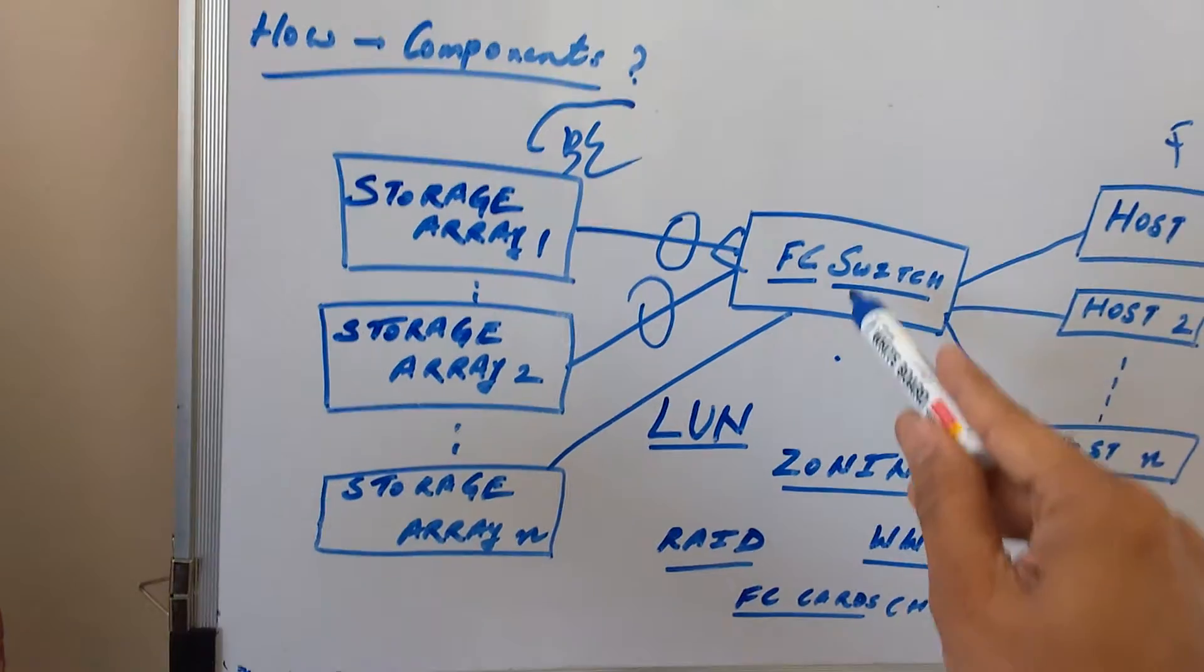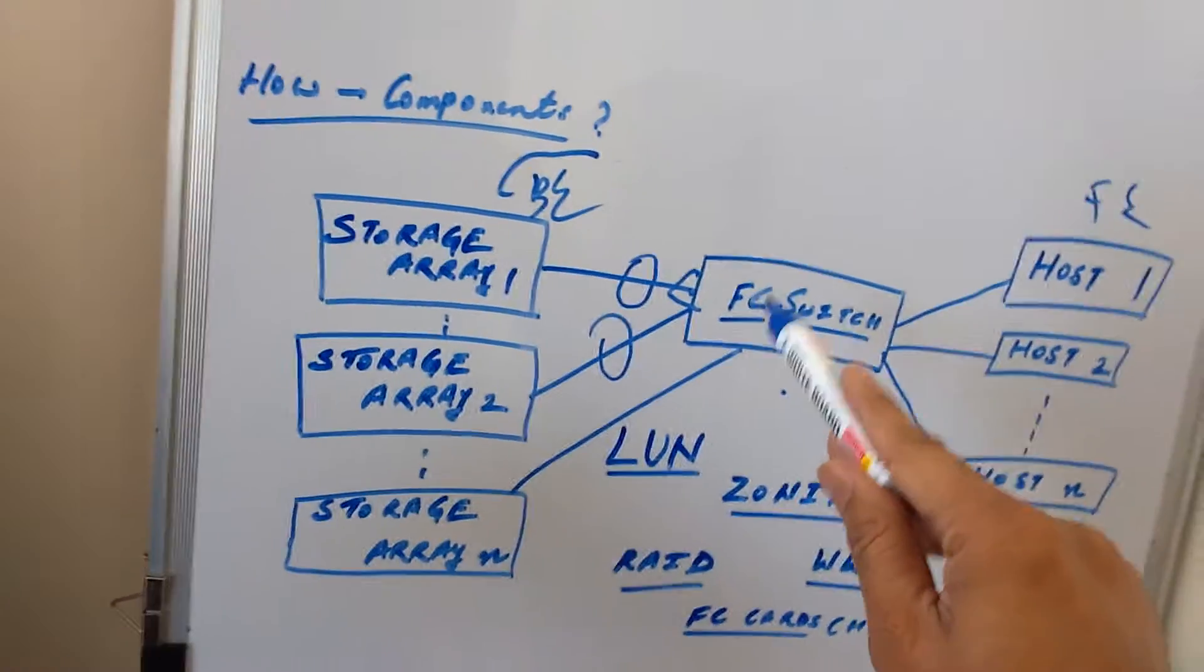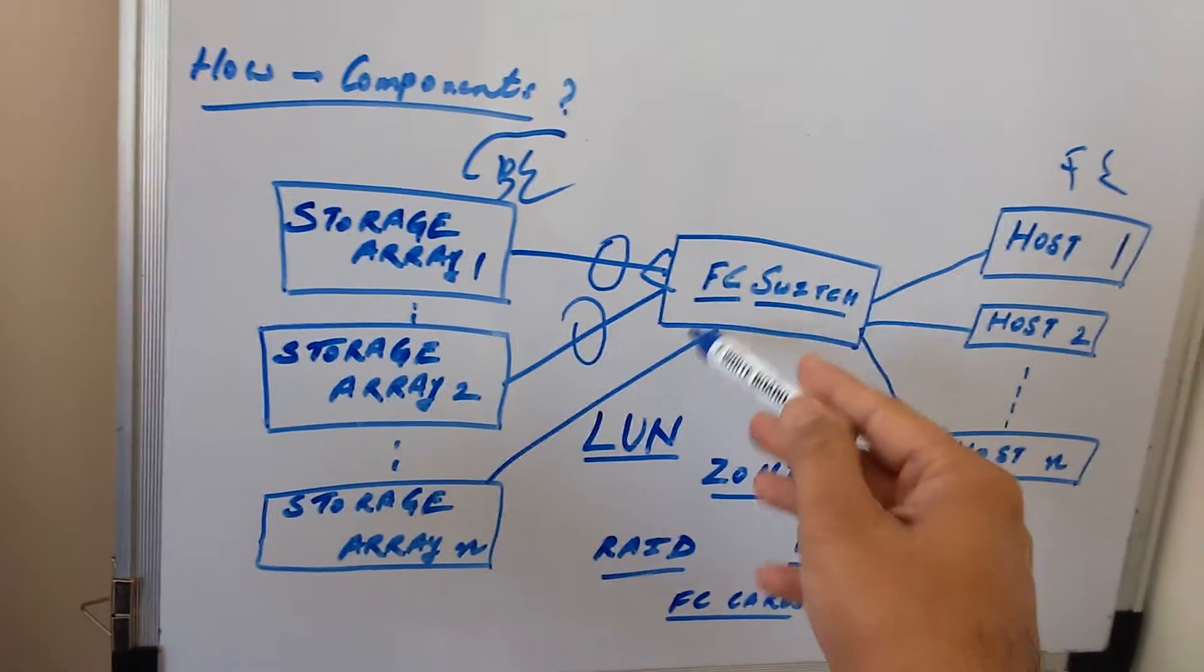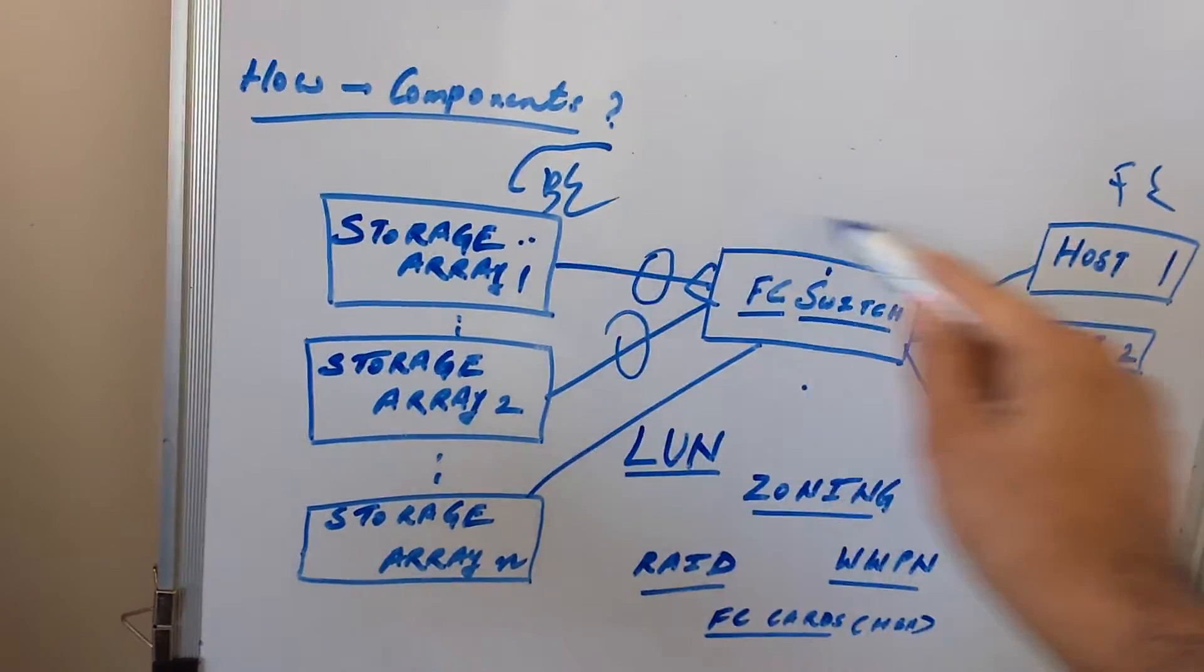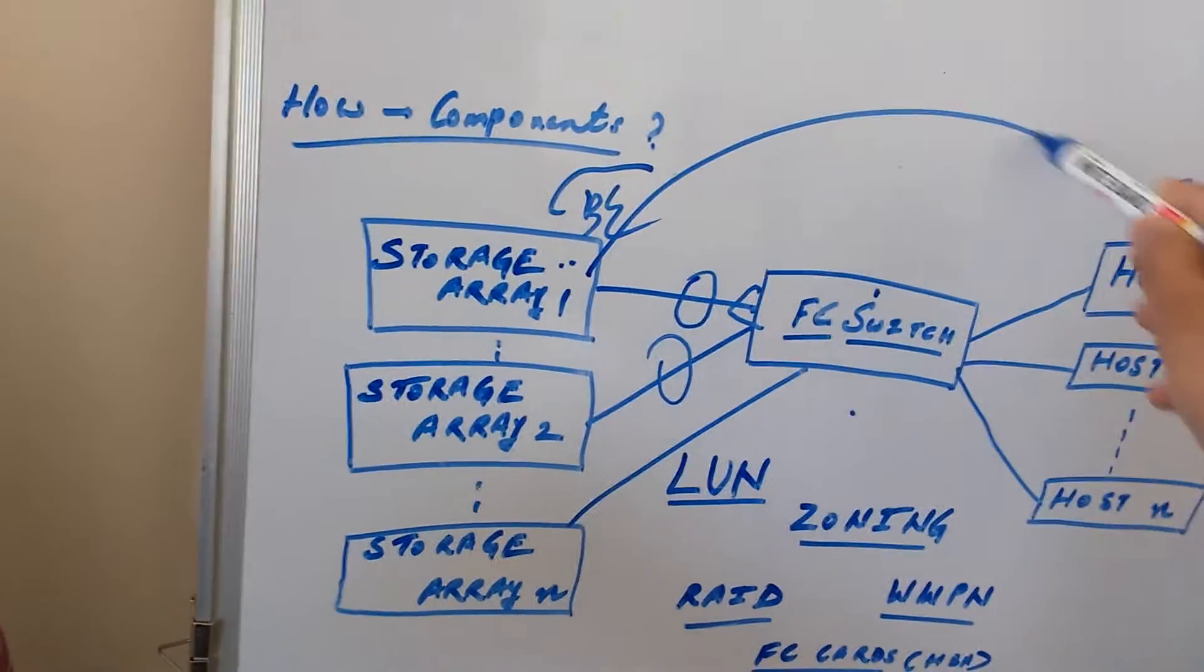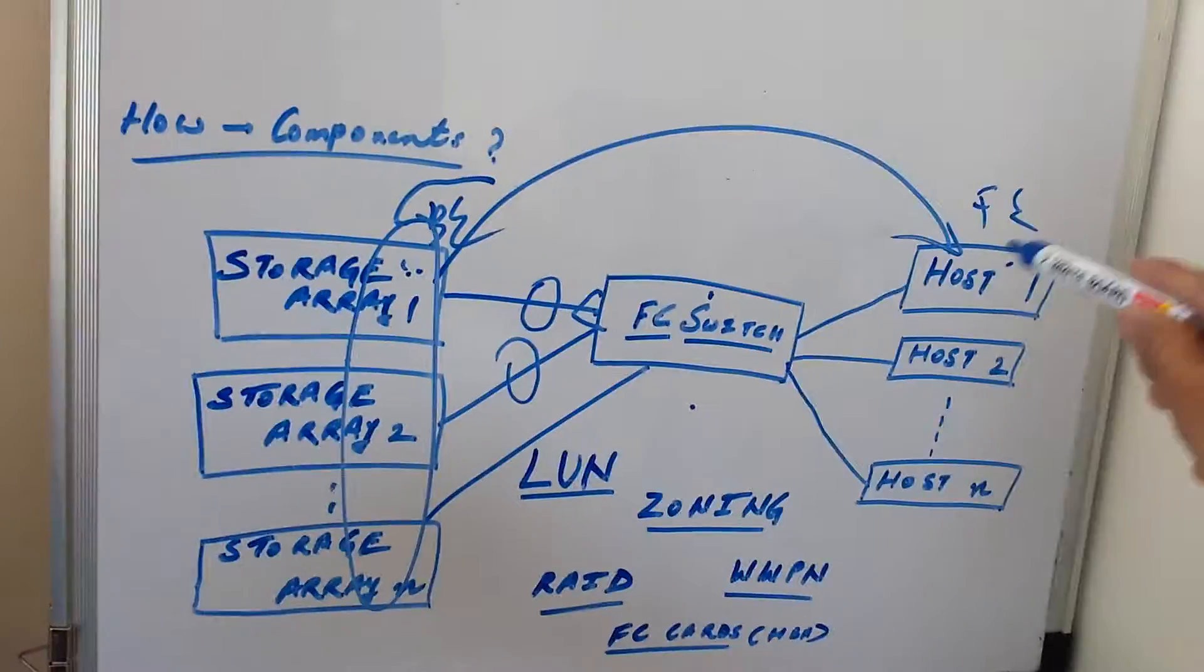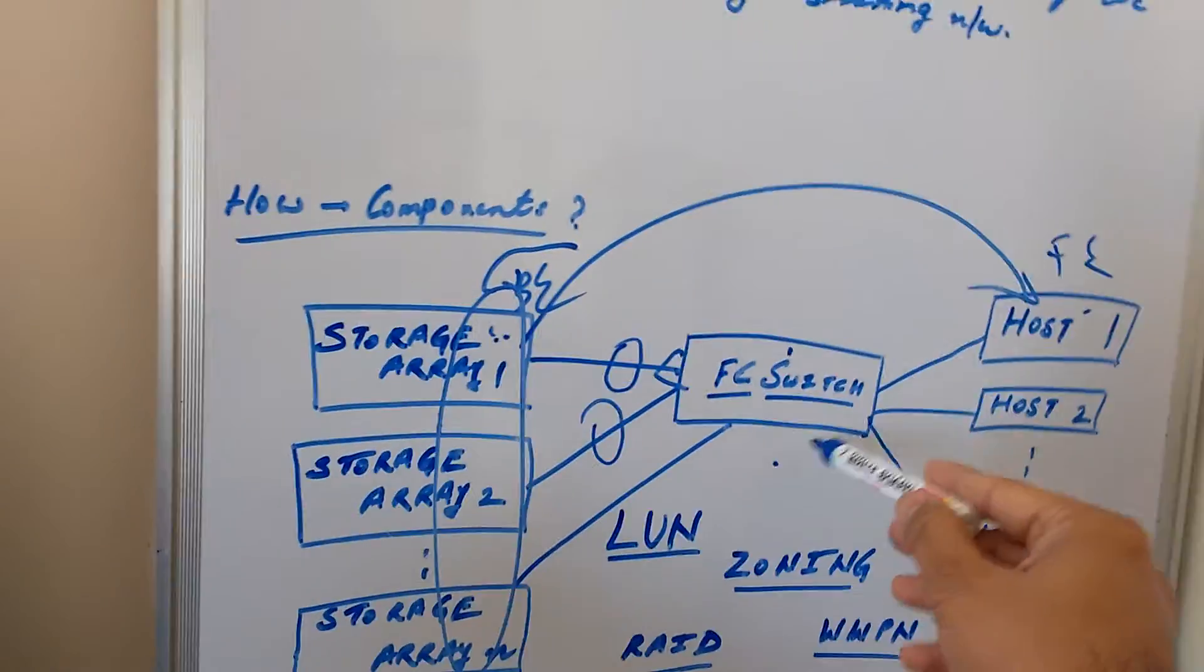At the FC switch, we have zoning. Here we make a zone for WWPNs. Like we have MAC addresses, in the SAN environment we have WWPNs. These worldwide port names are zoned for the storage array WWPNs and the host WWPNs. So data can be used as block devices from any of these storage arrays to any of these hosts. Multiple mappings are possible using the LUN mapping that we do through zoning.